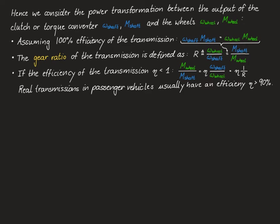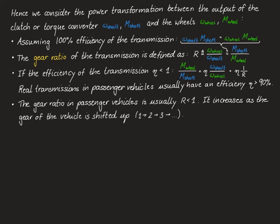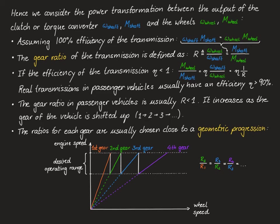Real transmissions in passenger vehicles typically have efficiency above 90%, including both the gearbox and the differential. The gear ratio in passenger vehicles is strictly less than 1 and increases as the gear is shifted up from gear 1 to gear 2 to gear 3 and so on. The gear ratios are chosen close to a geometric progression, meaning the fraction between the gear ratios of two successive gears is constant — for example, the ratio of gear 2 to gear 1 equals the ratio of gear 3 to gear 2, and so on.